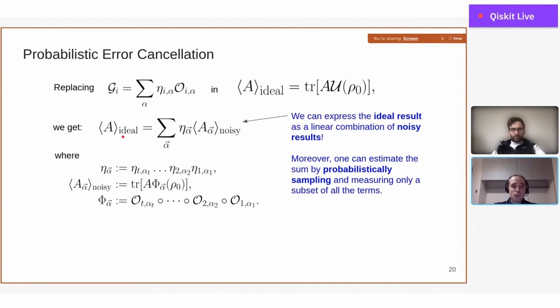This looks too good to be true—we are basically canceling any type of noise. Unfortunately, the number of terms in this sum is exponentially large, and so the second main idea of PEC is that instead of measuring all of them, you can sample some of them in order to approximate this expression. You can use Monte Carlo sampling, and in practice you need to measure a finite subset of the noisy observables. This is a very quick overview of PEC in theory.